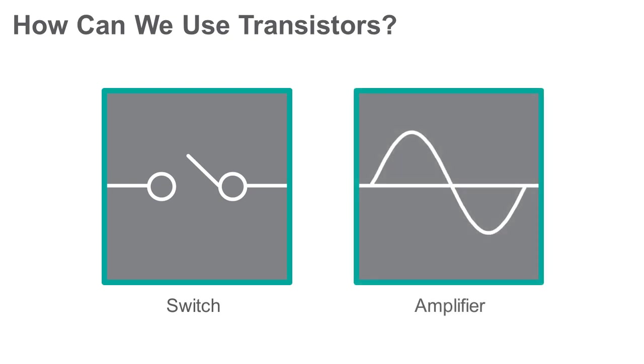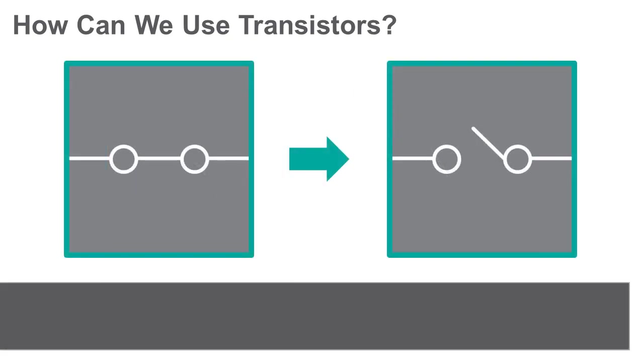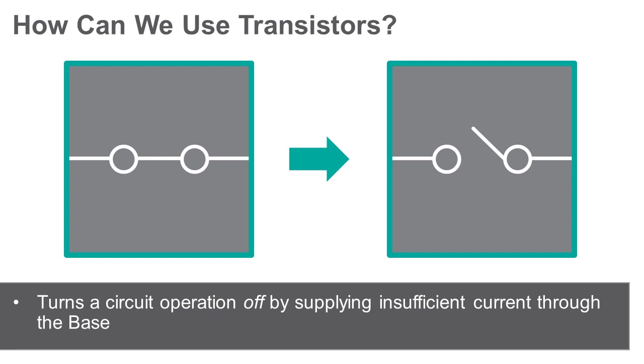Using a transistor as a switch is relatively simple. A mechanical switch turns a circuit off by breaking the circuit. A transistor turns a circuit operation off by supplying insufficient current through the base, which stops the flow of collector current.